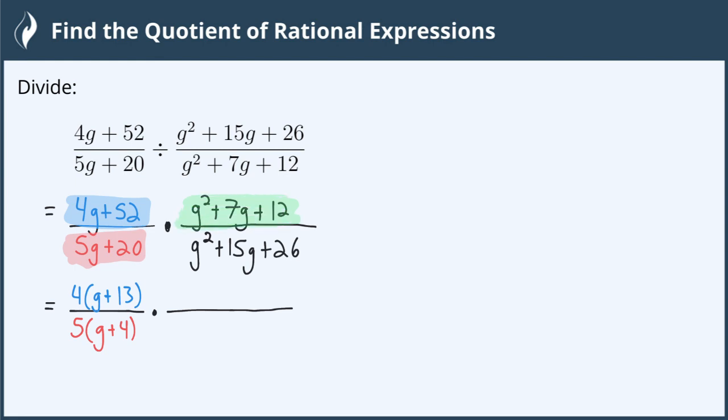we are looking for two numbers that multiply to 12 but add to 7. The numbers that do that are 3 and 4, so we can write this as g plus 3 times g plus 4.